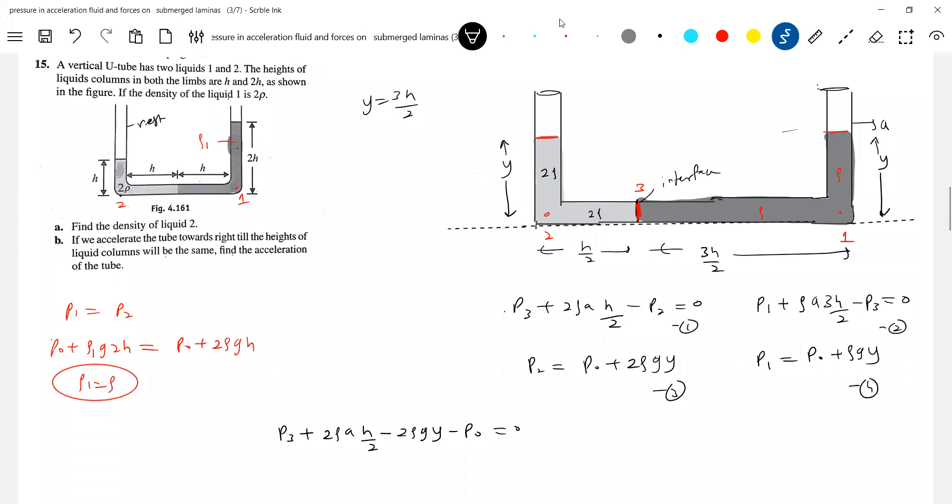P3 plus 2 rho A H by 2 minus 2 rho GY minus P0 equal to 0. So where is the P2? P2 is the intermediate point. If you substitute 3 in 1, I think you'll get this equation only. Similarly, let me write manometric equation. It's all about manometric equation.